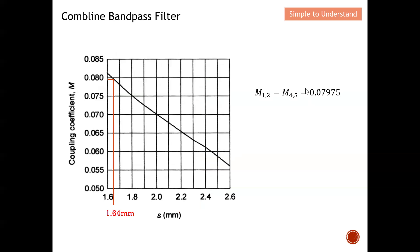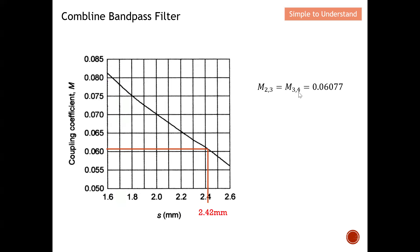For M12 = 0.07978 (approximately 0.08), drawing a line on the coupling coefficient graph gives a gap of 1.64 mm. For M23 = M34 = 0.06077 (approximately 0.06), drawing the corresponding line gives a gap of 2.42 mm. With all these gaps determined, we are ready to finalize the comb line band pass filter design.